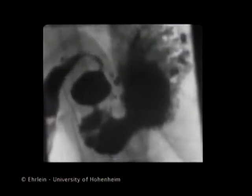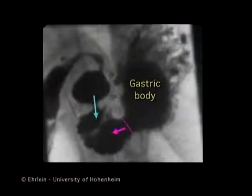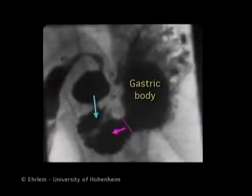When a peristaltic wave travels over the antrum, the subsequent peristaltic wave originates at the gastric body. It sweeps chyme from the body to the antrum. Simultaneously, chyme of the distal antrum flows backwards. It accumulates in the proximal antrum together with the chyme emptied from the gastric body.